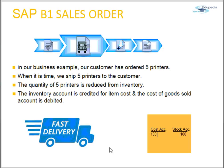Continuing with the scenario: the customer has ordered five printers. When it is time to ship those five printers, the quantity is reduced from inventory. Adding a delivery reduces the actual inventory levels. When you post a delivery, the corresponding goods issue is also posted — the goods leave the warehouse, inventory quantities are reduced, and if you are running perpetual inventory, the relevant inventory changes are posted to accounting.